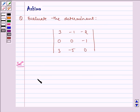We have 3, minus 1, minus 2; 0, 0, minus 1; 3, minus 5, 0.